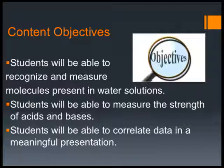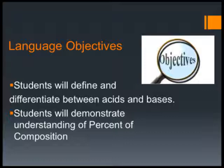In keeping with the theme of Common Core State objectives, we also want to look at language objectives, as students will be challenged to write across all disciplines. Students will be asked to define and differentiate between acids and bases, and also understand and demonstrate their understanding of what percent composition means — specifically what elements are in the water solutions and what percent composition might mean. Those are the two language objectives addressed in this lesson plan.